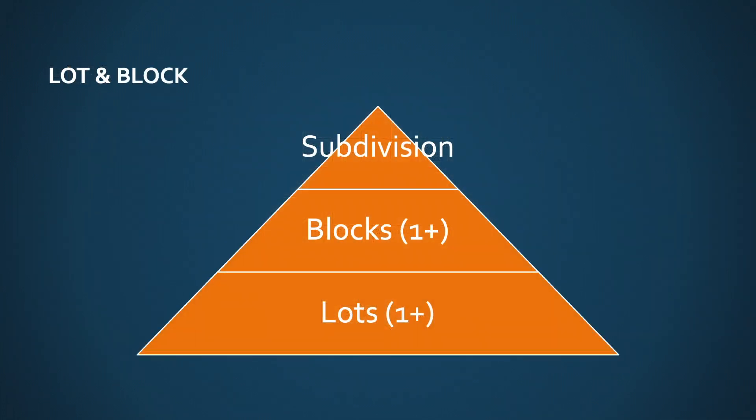Last but not least is the lot and block system. In lot and block, we have subdivisions as the main body, blocks — at least one per subdivision — and lots, at least one per subdivision, ranging from one to many.